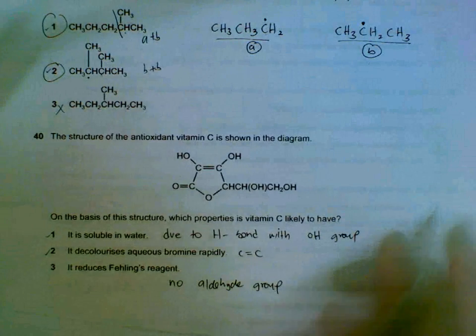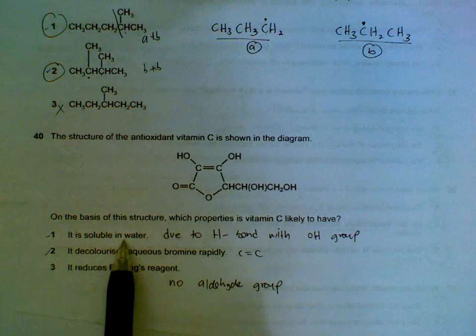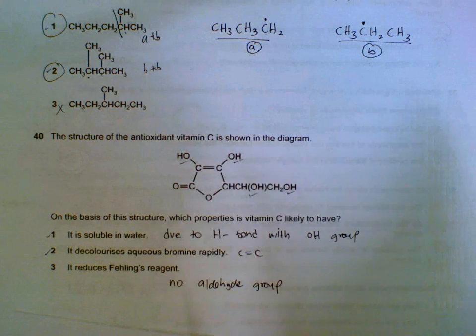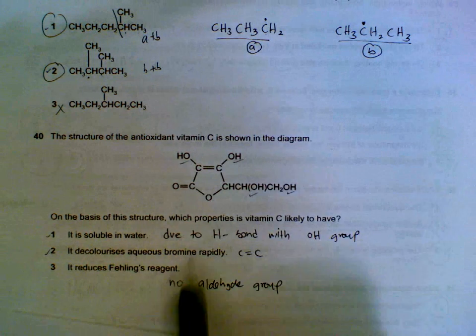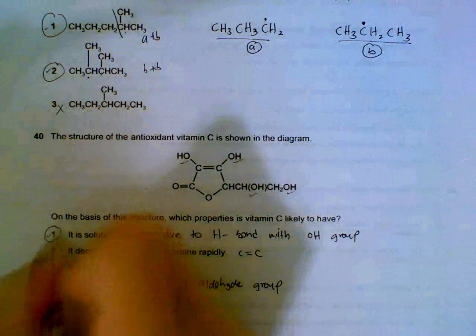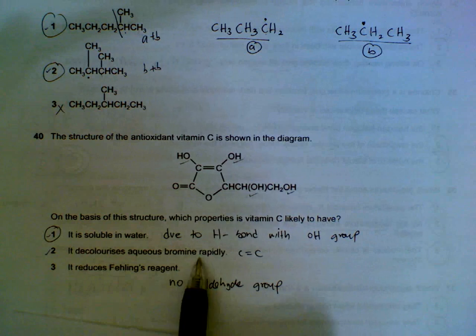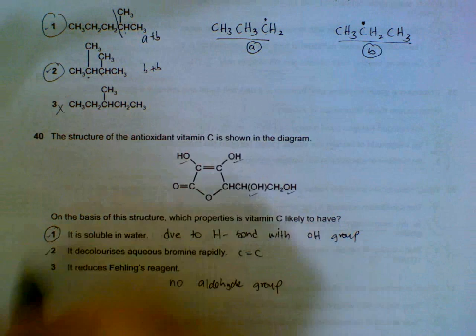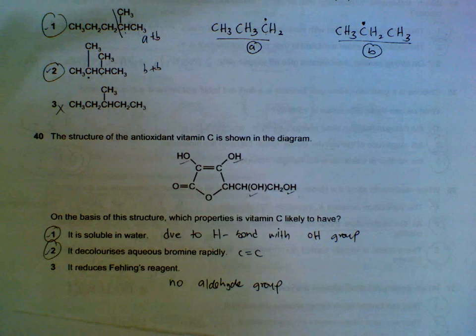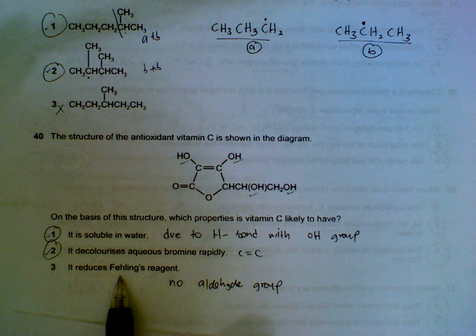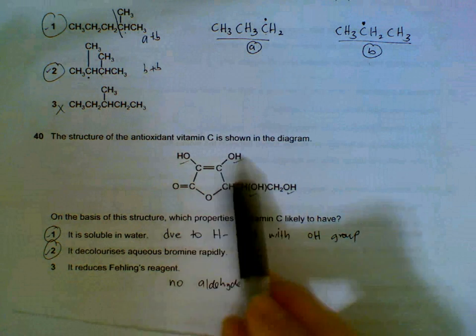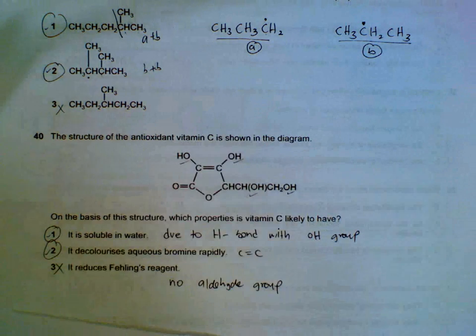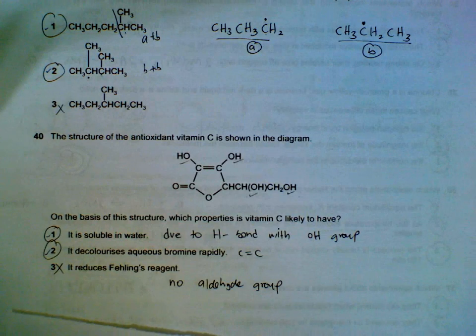Question 40: This structure should be soluble in water because we have all these hydroxyl groups that can form hydrogen bonds with water. It decolorizes bromine rapidly—we have a C=C double bond here, so it does decolorize bromine. It reduces Fehling's reagent—there's no aldehyde groups here, so it will not be able to react with Fehling's reagent. So only one and two are correct.